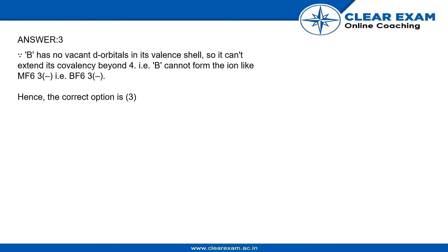Since B cannot extend its covalency beyond four, it cannot form the ion MF₆³⁻, that is BF₆³⁻. Hence the correct option is the third, which is B.